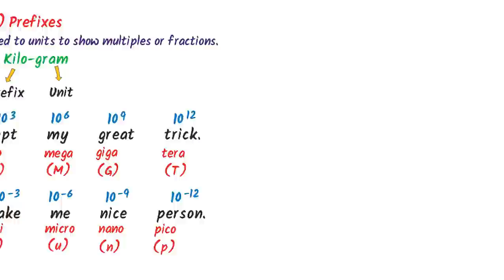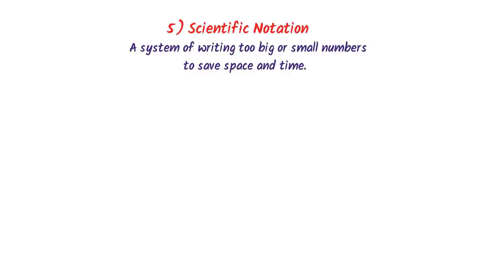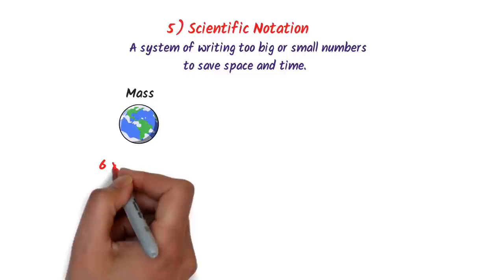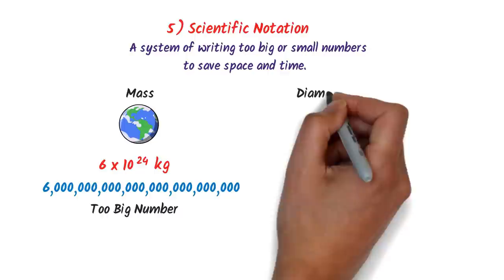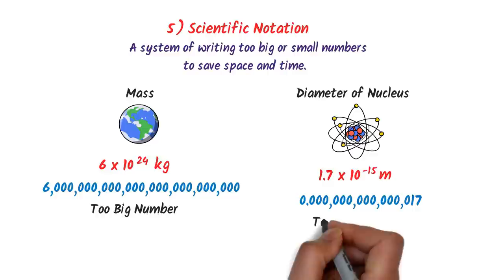The fifth topic is scientific notation. A system of writing very large or very small numbers to save space and time is called scientific notation. For example, the mass of the earth is approximately 6 × 10²⁴ kg — a very big number. The diameter of the nucleus is 1.7 × 10⁻¹⁵ meter — a very small number. Using scientific notation, we can easily save space and time when writing these values.